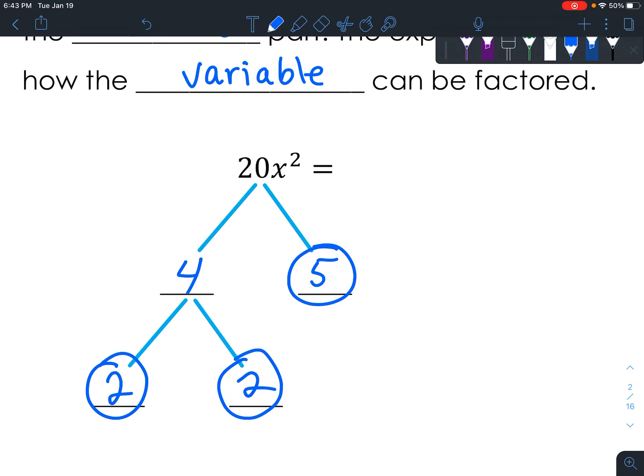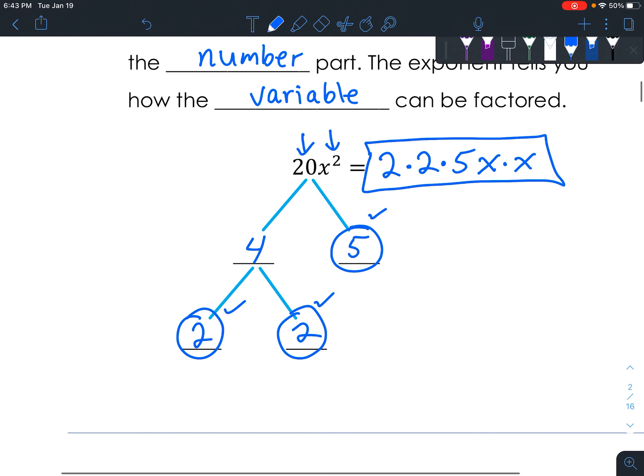The prime factorization are those things multiplied together. So for instance, we have a 2 here, another 2, and a 5. If you multiply those three numbers together, you get 20. And the x, because it's x squared, that means I have two x's multiplied together. So we have 2 times 2 times 5 times x times x. That would be the prime factorization, breaking it into all the smallest pieces possible.